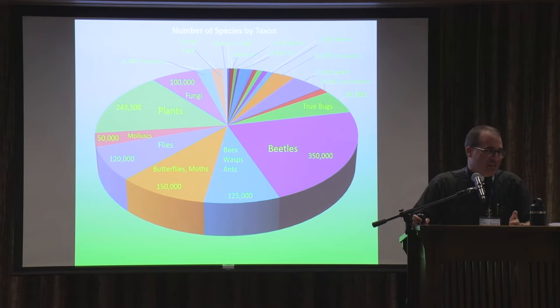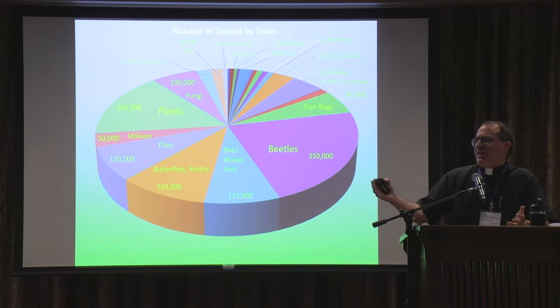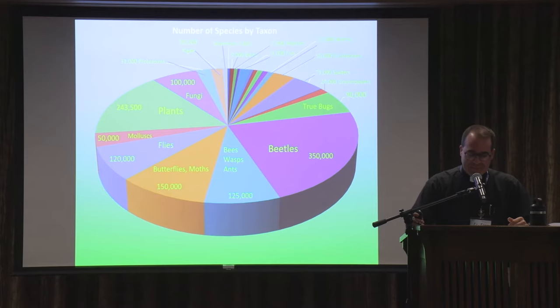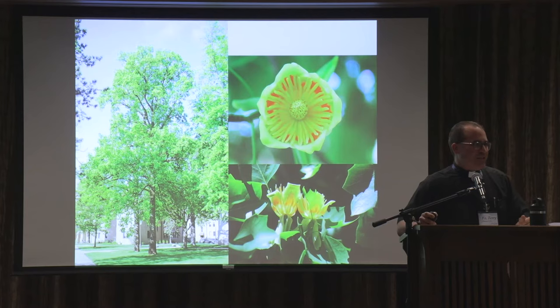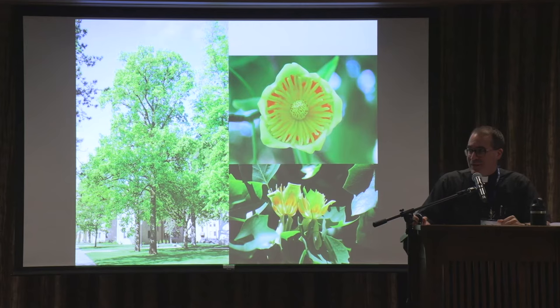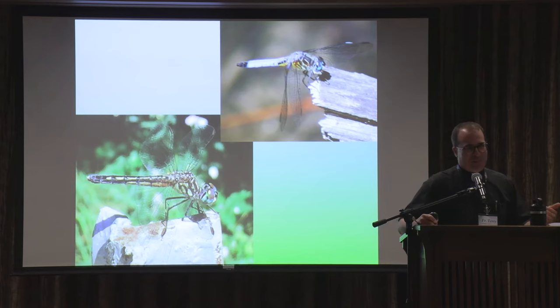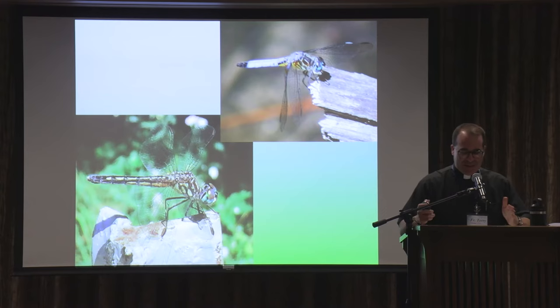That led the atheist geneticist J.B.S. Haldane, back in the 1920s and 30s, to supposedly quip when asked by theologians what we might learn about God from studying nature: 'God had a fondness for beetles.' The tree species shown is the tulip poplar — the state tree of Indiana, found on campus, which just stopped blooming a week or two ago. And the rest of the talk will be kind of the answer to the question: what's the relationship of these blue dasher dragonflies to Jesus Christ?